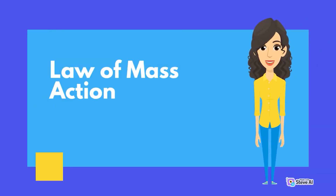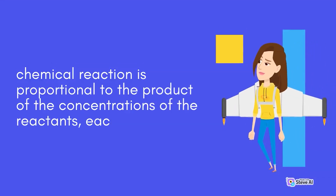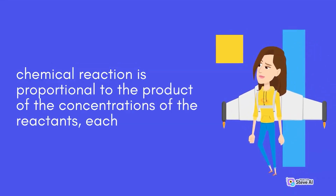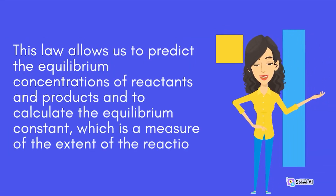The law of mass action is a fundamental principle of chemical equilibrium that states that the rate of a chemical reaction is proportional to the product of the concentrations of the reactants, each raised to the power of their stoichiometric coefficients. This law allows us to predict the equilibrium concentrations of reactants and products and to calculate the equilibrium constant, which is a measure of the extent of the reaction.